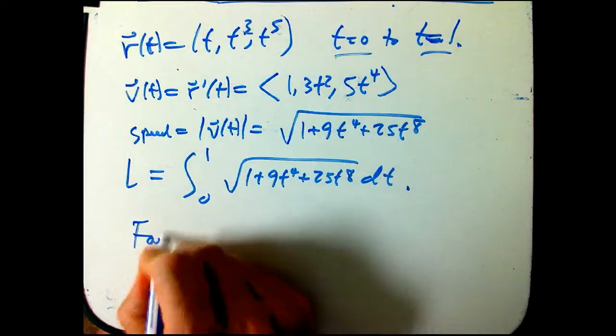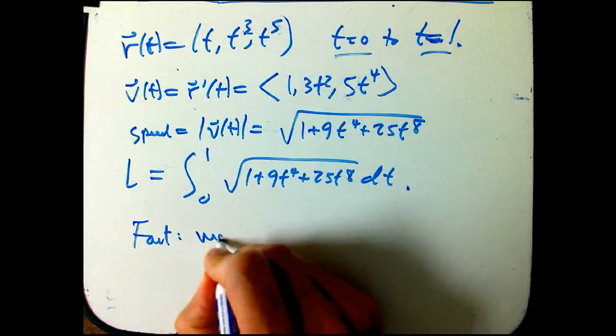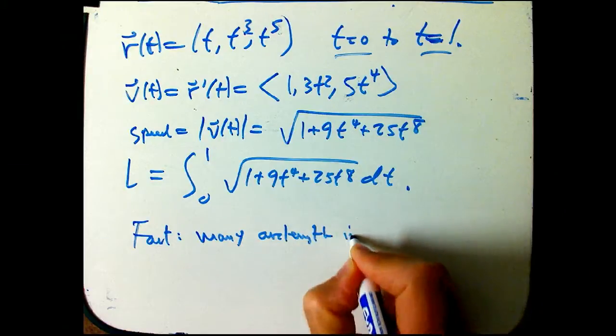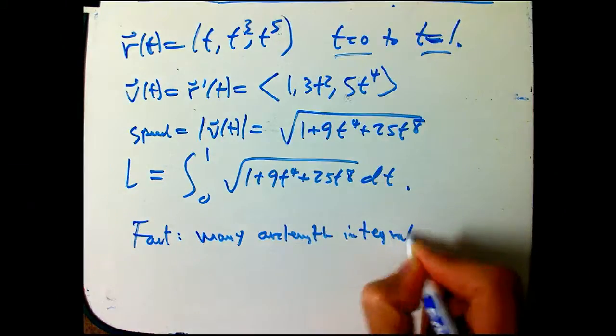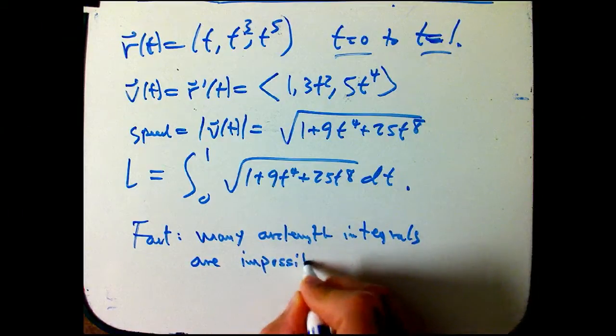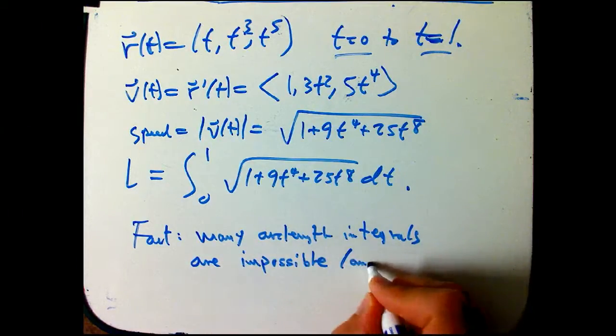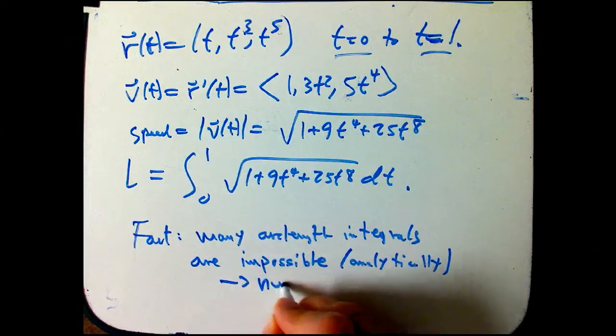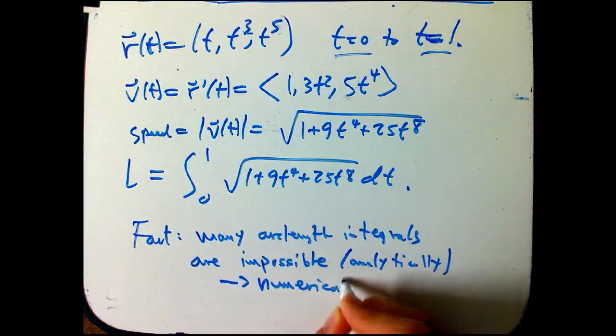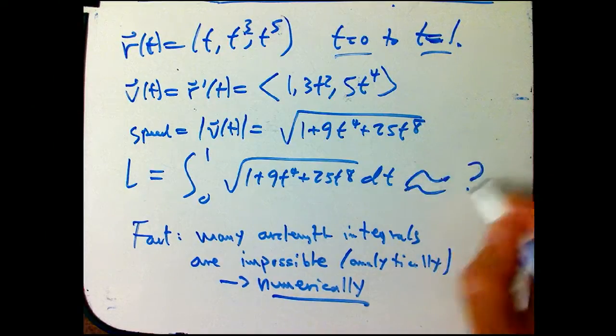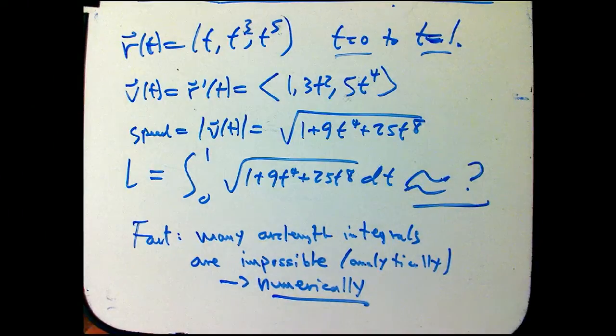And the fact is, that many, many, many fairly natural arc length integrals are impossible, meaning impossible to do exactly analytically. And so what that means is you do it numerically, practically speaking. You use the calculator and you get an approximate answer. I'm not going to go ahead and do that because that wasn't what I'm terribly interested in here. So you might have to do it numerically.